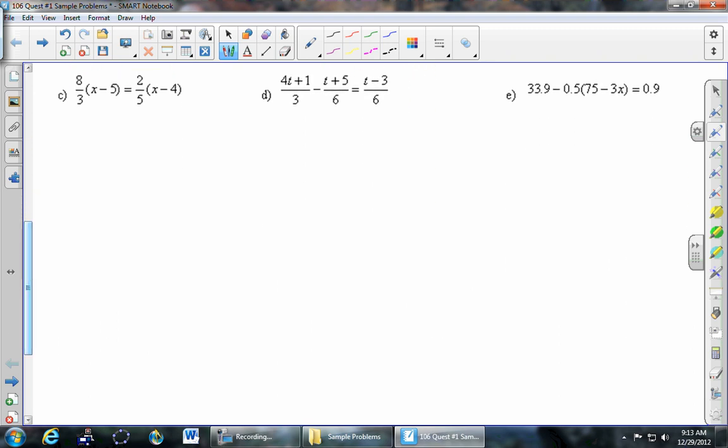Part C. 8 thirds times x minus 5 equals 2 fifths times x minus 4. So you could distribute the fractions through both parentheses. That would get rid of the parentheses just like we did above. If you're comfortable, I think it's actually easier to multiply both sides by the lowest common denominator. Lowest common denominator of all the denominators you see. There's a 3 and a 5. So the lowest common denominator is actually the product of those two numbers, 15 in this case. So I'm going to copy the original equation again.